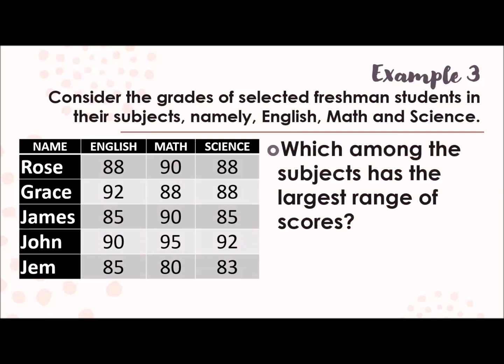Then I think this is the last question. Which among the subjects has the largest range of scores? Range again. It only means the highest score minus the lowest score. So let's start with English. In English, our highest score is 92, and our lowest score is 85. Just subtract them. What's the answer? 7. Same process for mathematics. The highest score is 95 minus 80. That is 15. And then for science, we have here the highest score is 92 minus 83. The answer there is 9. So we can now answer the problem or the question, which among the subjects has the largest range of scores? That is obviously the mathematics.